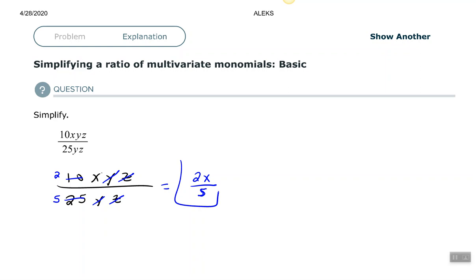So two times X over five. And that's how you would simplify those. All right, good people. I hope you found this video to be helpful. Thank you.